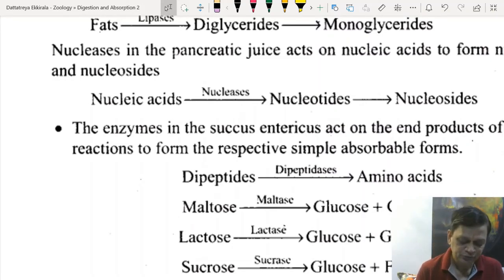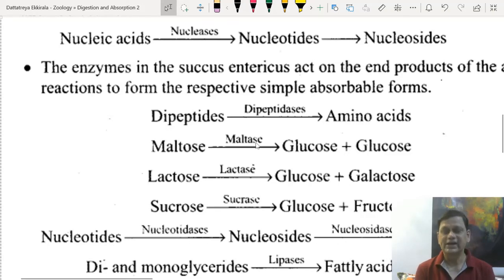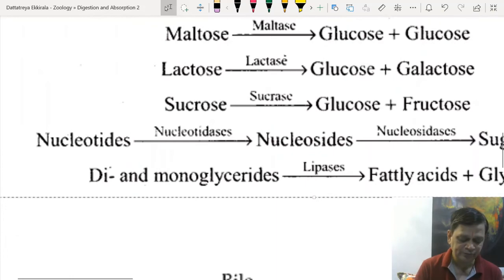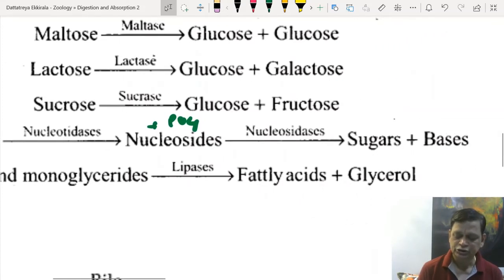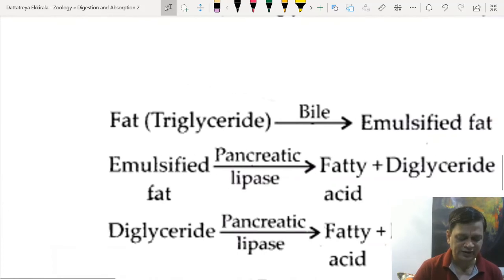Later action by intestinal juice converts proteins to amino acids. This includes three disaccharides. Maltose contains glucose and glucose. Maltase converts this. Lactase converts lactose into glucose and galactose. Sucrose is converted to glucose and fructose by sucrase, also called invertase. Nucleotides formed by pancreatic action on DNAs and RNAs are subjected to nucleotidases, breaking phosphodiester bonds into nucleosides plus phosphate. Then sugars—pentose, 5-carbon sugars—are separated from bases. Now, exclusively focus on fat digestion.